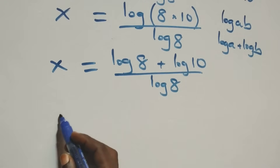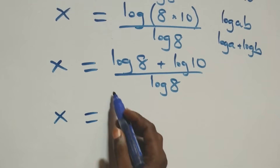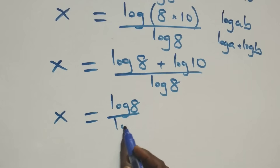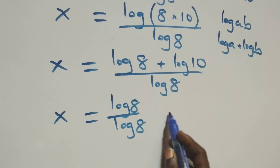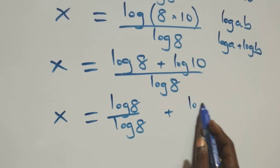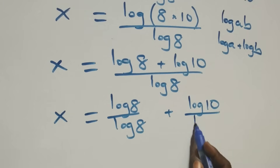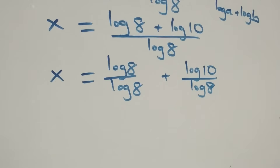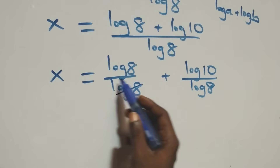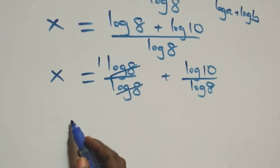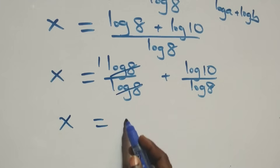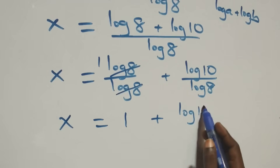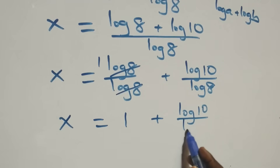We separate this into two fractions: x equals log 8 over log 8 plus log 10 over log 8. Log 8 over log 8 cancels to give 1, so x equals 1 plus log 10 over log 8.